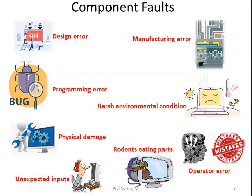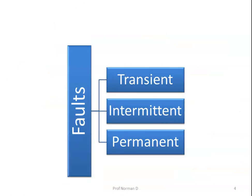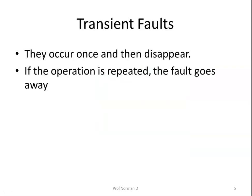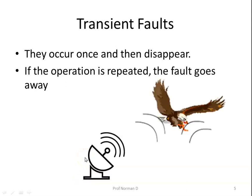Faults are generally classified as transient, intermittent, and permanent faults. We will discuss each briefly, starting with transient faults. Transient faults occur once and then they disappear; if the operation is repeated again the fault goes away. For example, a bird flying through a beam of a microwave transmitter may cause lost bits on some network.